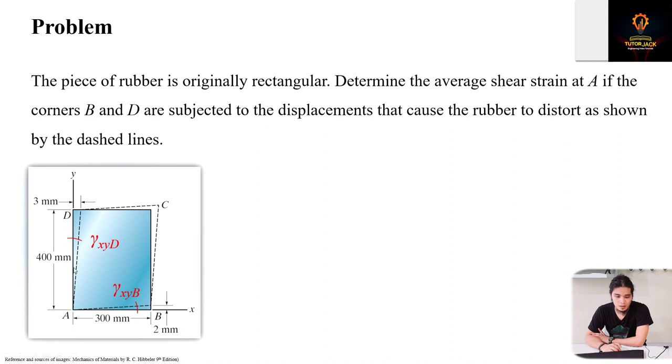The change in angle AD and the change in angle AB. Therefore, since at point A there are two angles that changed, we can say that the average shear strain at point A along the XY plane is just equal to the sum of gamma AD and gamma AB, because two angles changed.